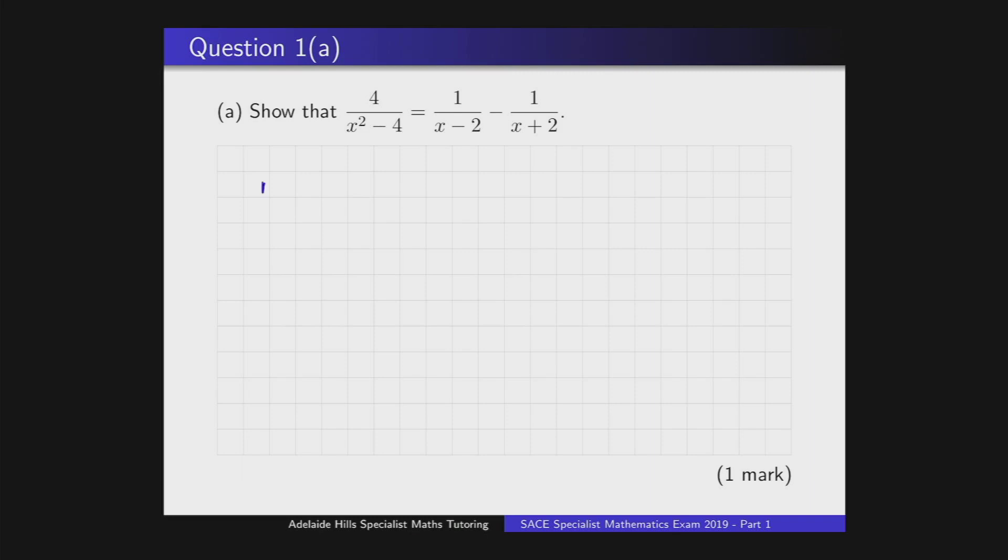So what we're going to do is start with the right hand side. The right hand side has got a factor of x minus 2, so we're going to multiply that by something that will give us x squared minus 4 on the denominator. So what we want is x plus 2, and you can see then our calculation for the denominator is going to be a difference of two squares: x minus 2 times x plus 2, which will give us x squared minus 4. We have to do the second term as well—it's got x plus 2, so we're going to multiply that by x minus 2 to get the same result.